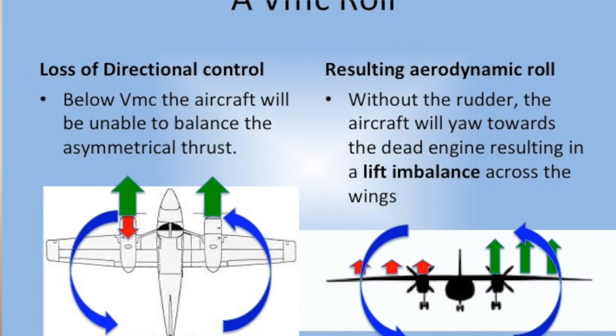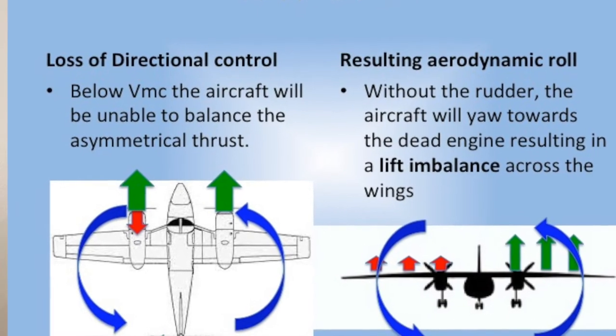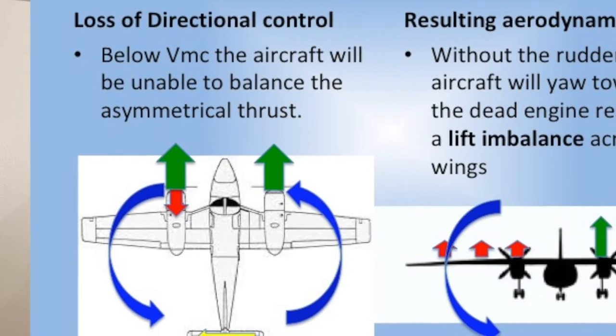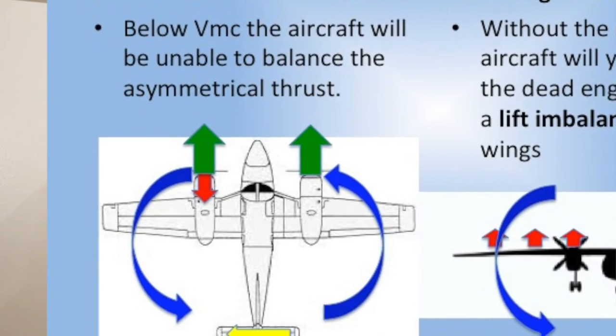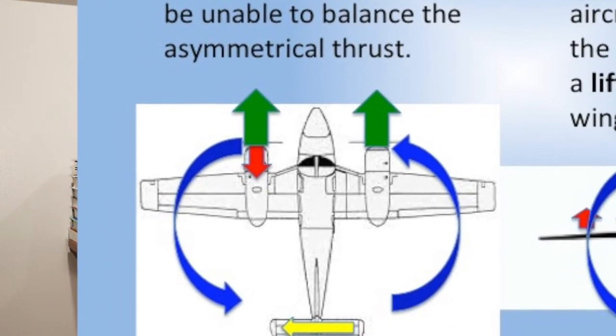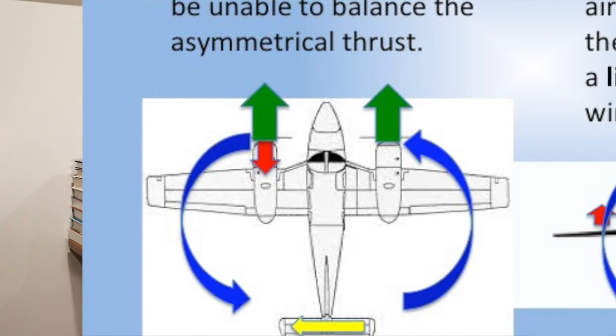But what happens when we get to VMC? We started off with two symmetrical thrusts on each side of the engine. Then we went to asymmetrical thrust with the other engine not producing any thrust. Then we're offsetting it with our rudder, we're rolled into it. But when we finally reach VMC, the rudder is no longer going to be able to control the forces from that engine. And it is going to yaw into the inoperative engine.